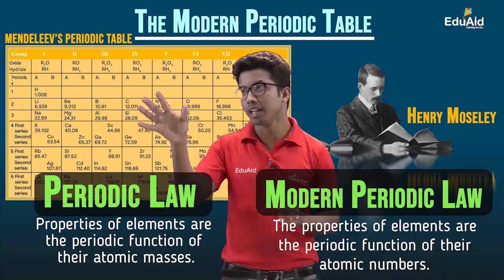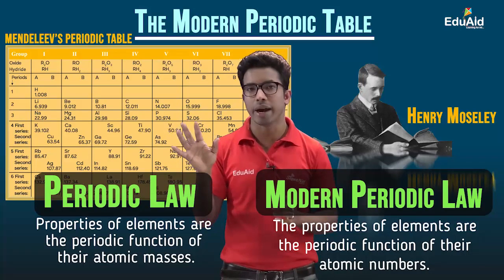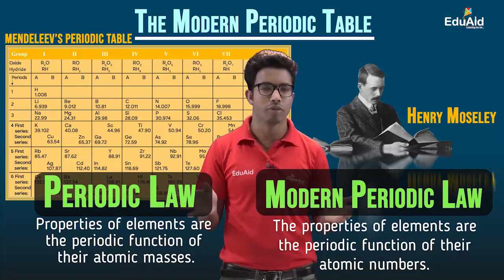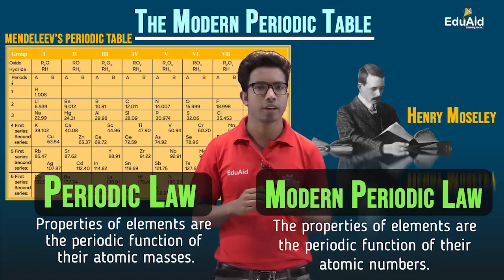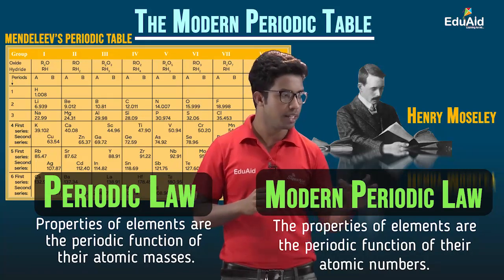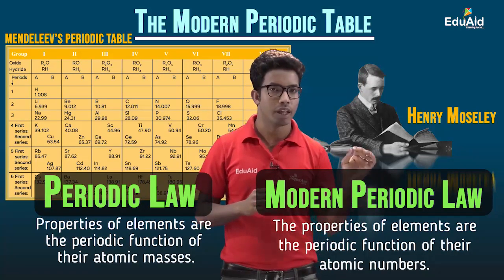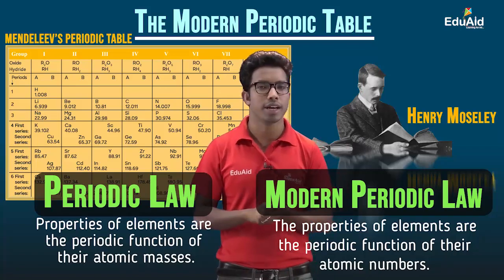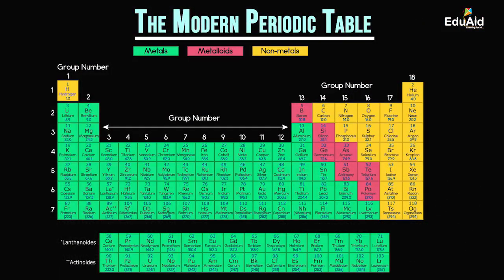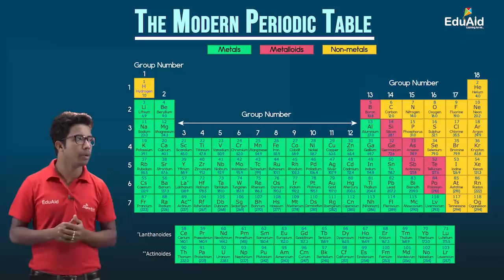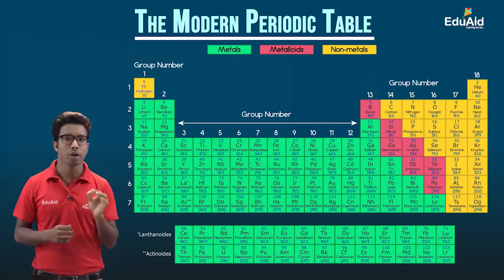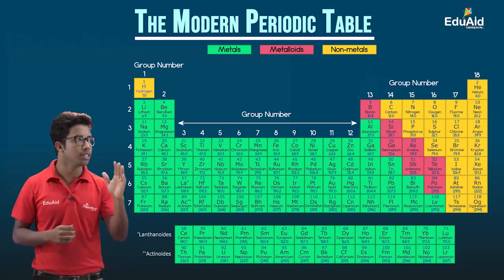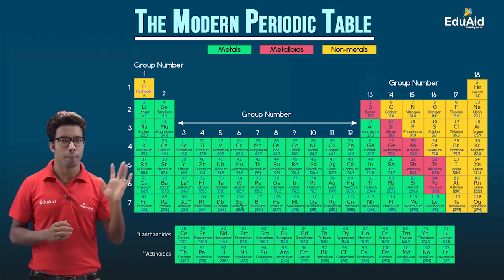Since the law governing Mendeleev's periodic table was changed to a newer form, there should be some change in the periodic table also. Based on this newer periodic law, the table produced is called the modern periodic table. In this periodic table, all the elements are arranged with increasing atomic number, not atomic mass. This is the basis on which the whole modern periodic table was made.